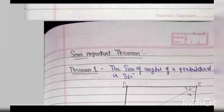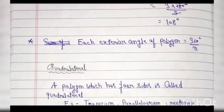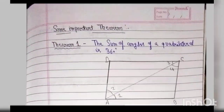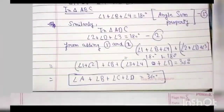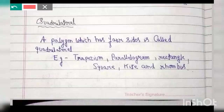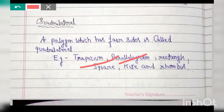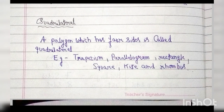In today's video, we have covered curves, polygons, types of polygons, polygon properties, and quadrilaterals. In the next class, we will study the types of quadrilateral: trapezium, parallelogram, rectangle, square, and rhombus. The next class is very important. If you like this video, please comment, subscribe. Thank you, goodbye.